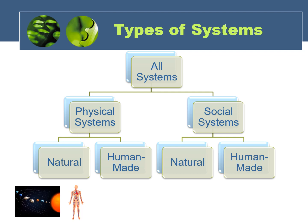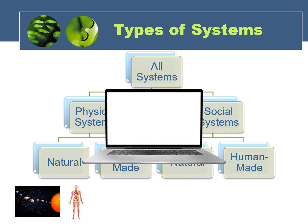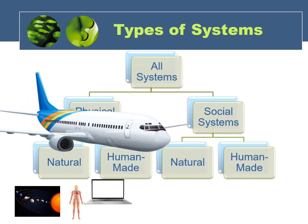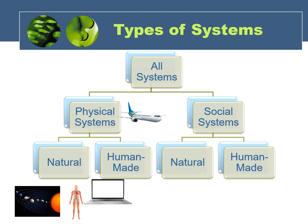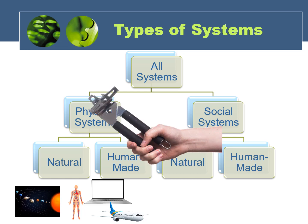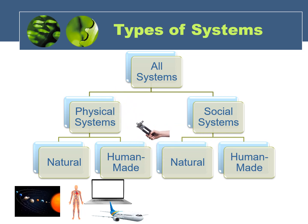The second group of physical systems are what we would call human-made. A physical system of this type only exists because it was deliberately designed and built by humans. Specific examples would be a laptop or an airplane. But such systems don't actually need to be that complicated — something as simple as a manual can opener is a human-made physical system.